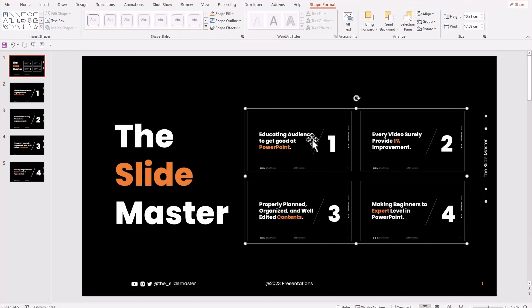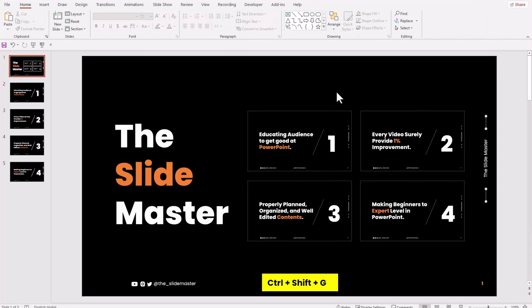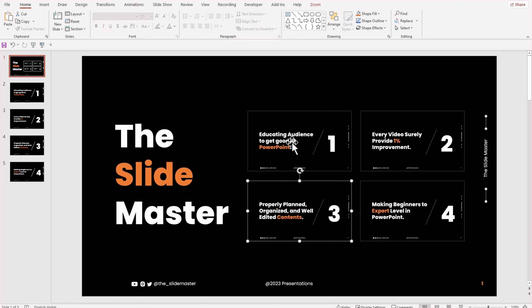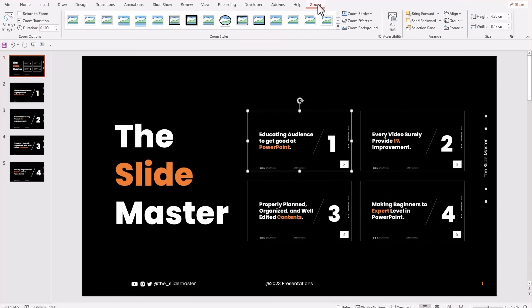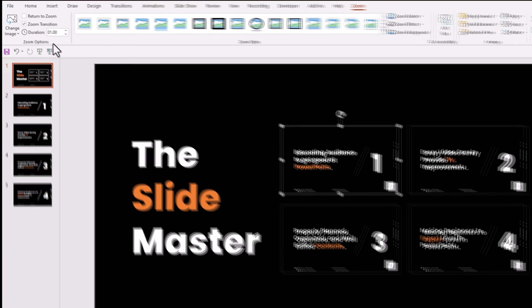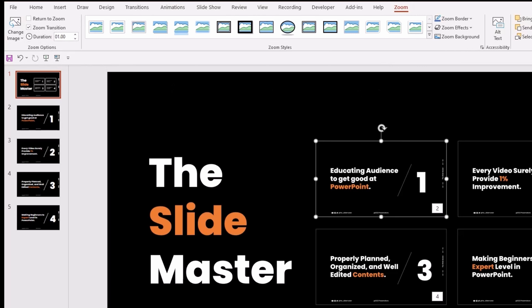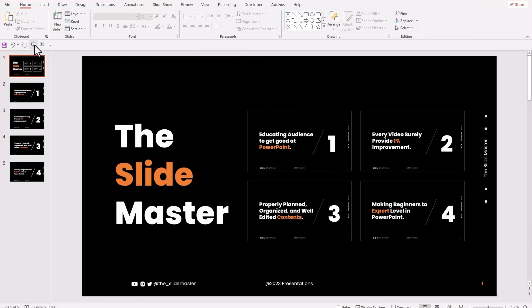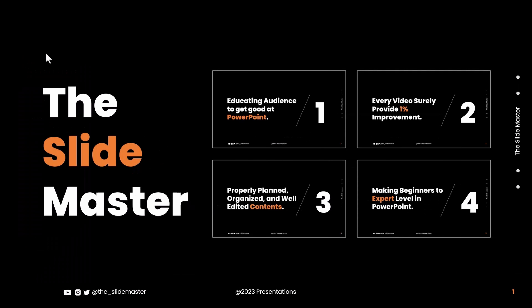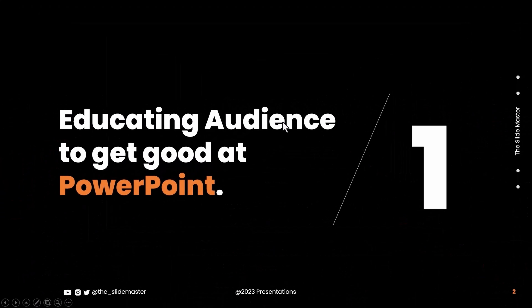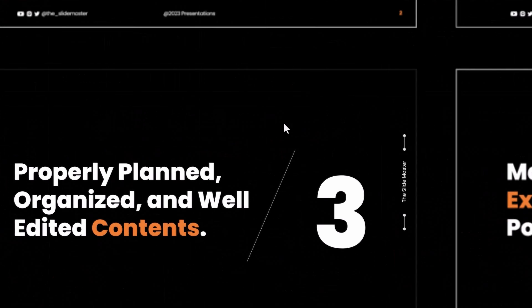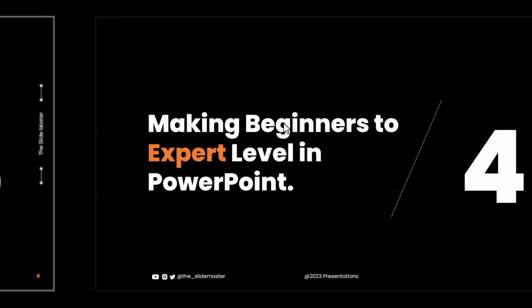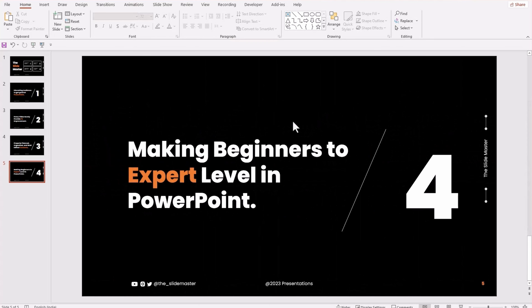Press Ctrl+Shift+G to ungroup the slides so that we can apply the zoom effect to all the slides individually. Select an inserted slide and go to the Zoom tab — here you can see the default zoom settings. Let's go to the slideshow mode to test the slide zoom effect. Click on the first slide — it zooms in and continues the same for the next slides. This is what the presentation looks like in the default settings.